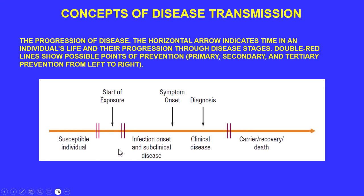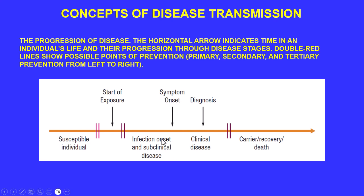After exposure, the second level involves treatment with antibiotics, antifungals, etc. Without intervention, the infection onset and subclinical disease phase follow — subclinical meaning symptoms haven't become profound yet. After this, symptoms begin to show. You then have, by definition, a clinical disease when you have a diagnosis — symptoms such as fever, nausea, vomiting, discoloration of the sclera, bumps, rashes on the skin, etc.